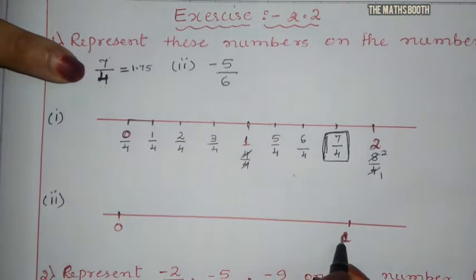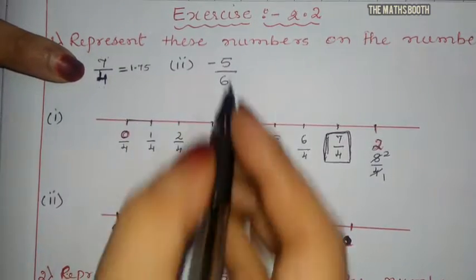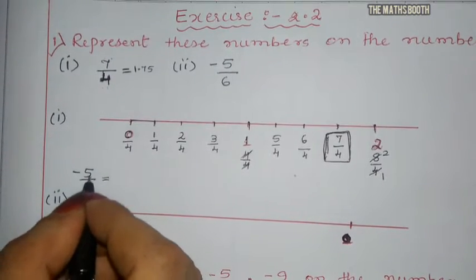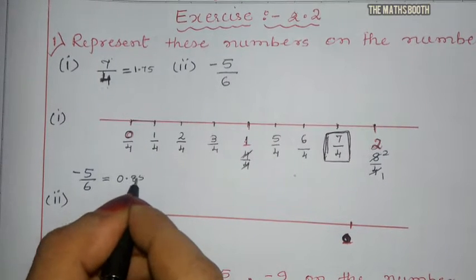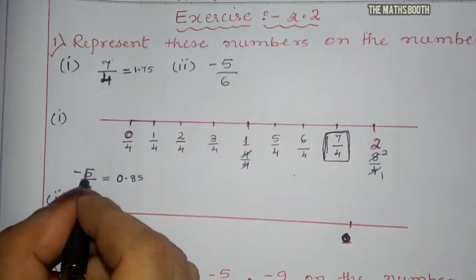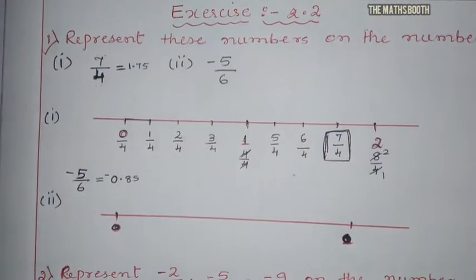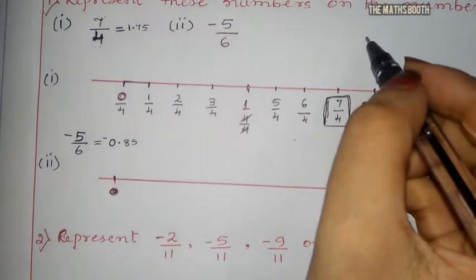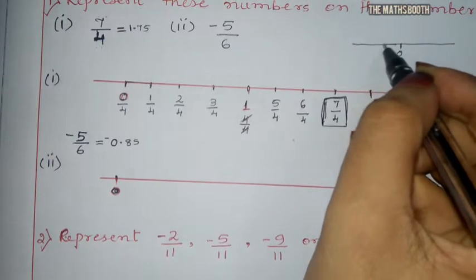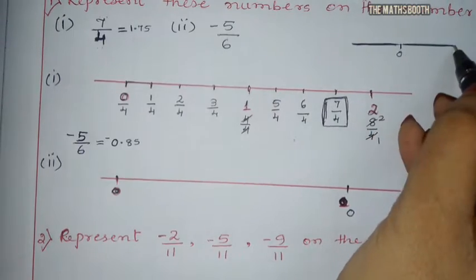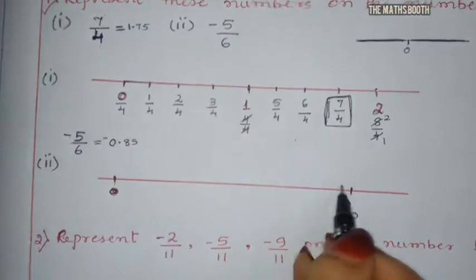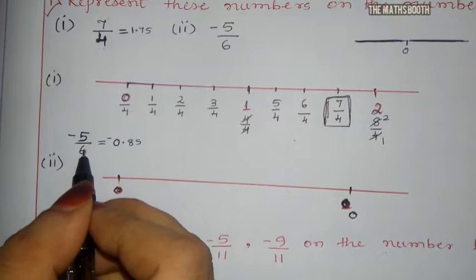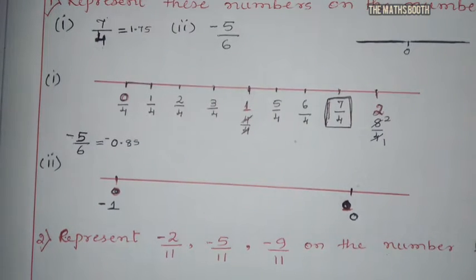In the same way, now the next question is minus 5 by 6. Minus 5 by 6 is approximately 0.8 something. This number minus 5 by 6 comes between 0 and minus 1. All negative numbers come on this side of the number line. So minus 5 by 6 will come in between 0 and minus 1.